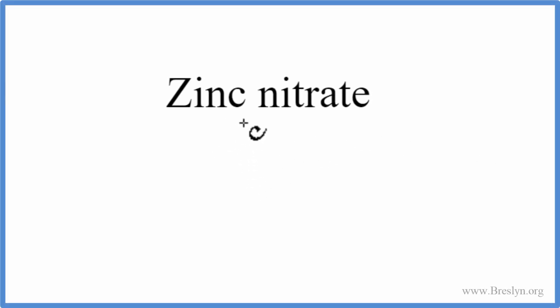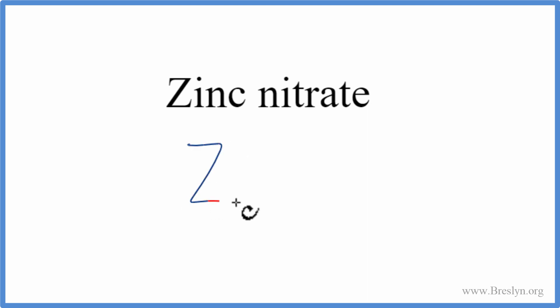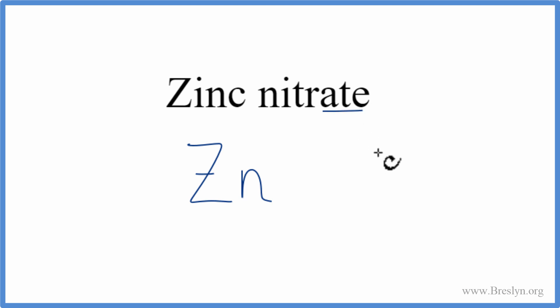To write the formula for zinc nitrate, we go to the periodic table. We look up zinc, which is Zn, and then nitrate — that's not on the periodic table. We have this -ATE ending.